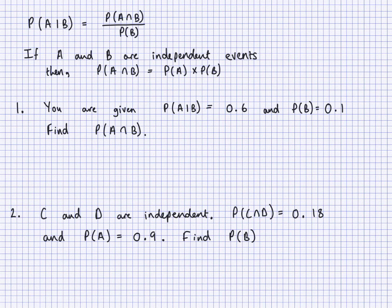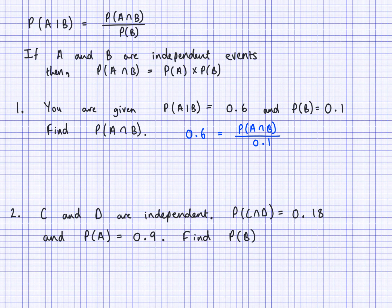Here are some basic examples of setting up equations and rearranging to find what we need. We're given probability of A given B equals 0.6 and probability of B equals 0.1, and we need to find probability of A intersection B. Substituting into the formula: 0.6 equals probability of A intersection B divided by 0.1. Multiplying both sides by 0.1 gives 0.6 times 0.1, which is 0.06. So probability of A intersection B equals 0.06.